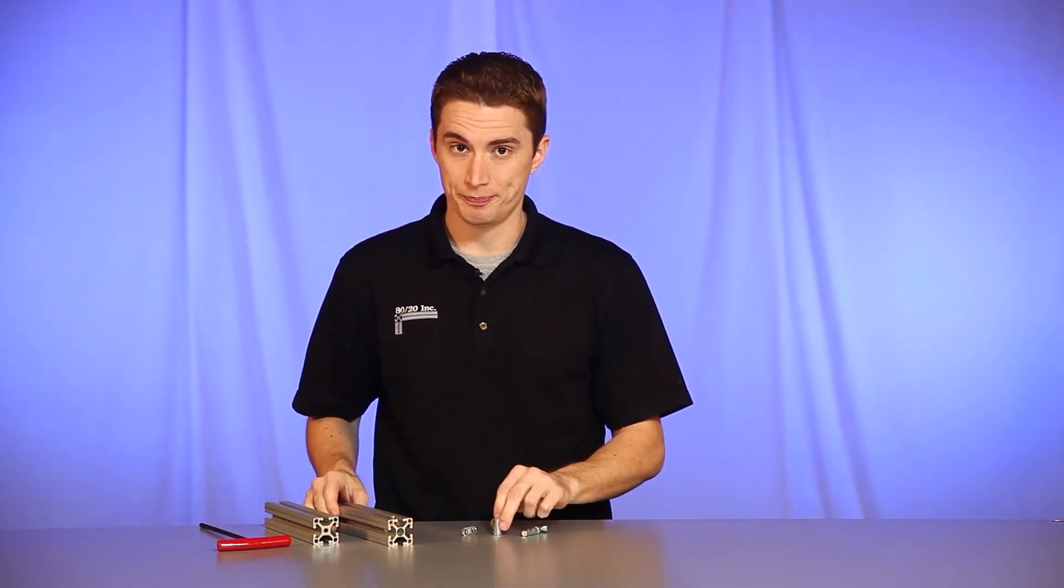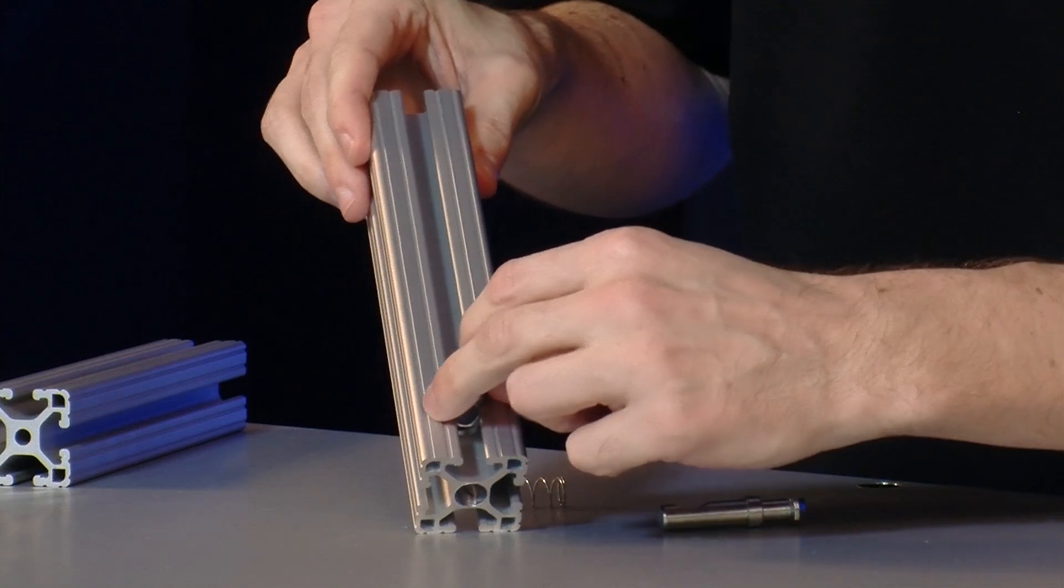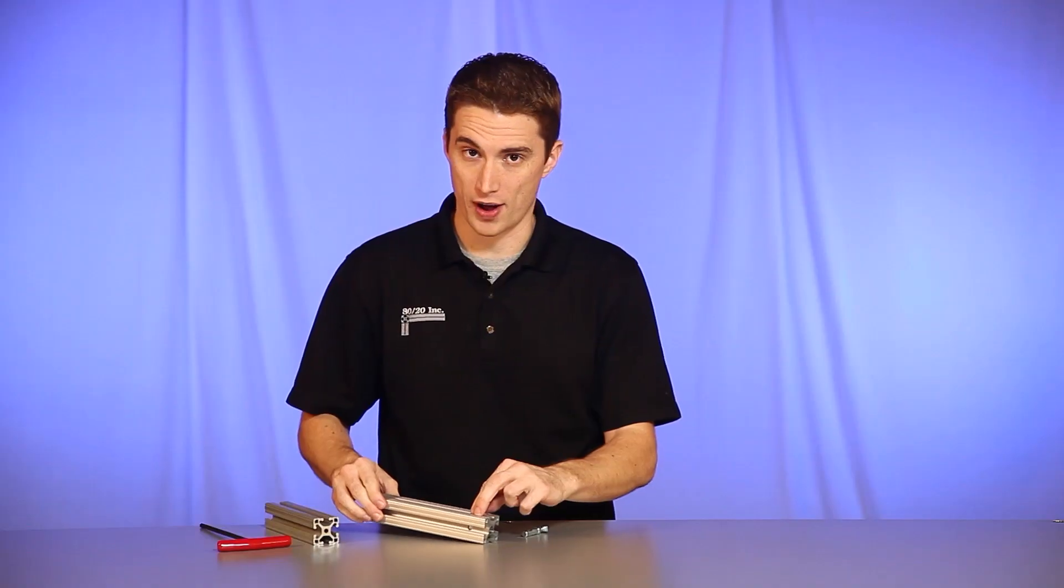Now when it comes to installing a central connector, you're going to start with your barrel and place it into the counter bore service, making sure the hole faces out towards the end of the profile.